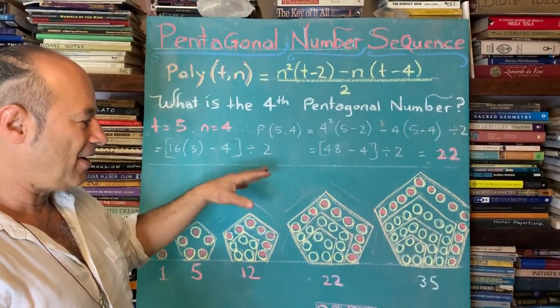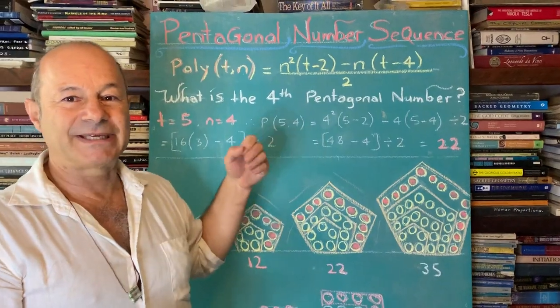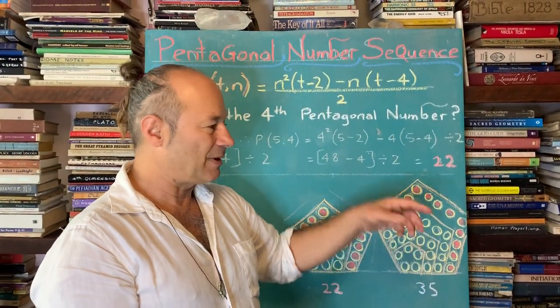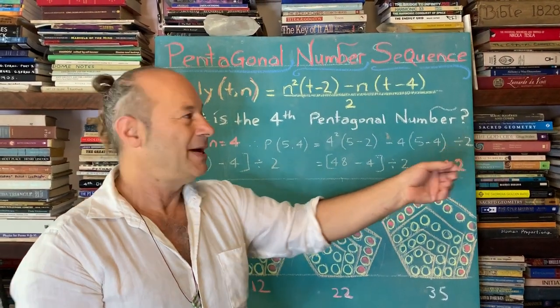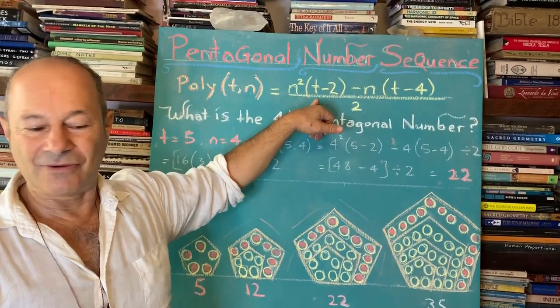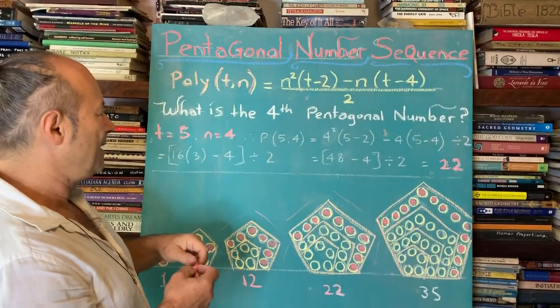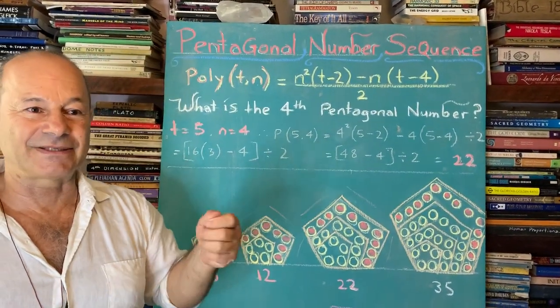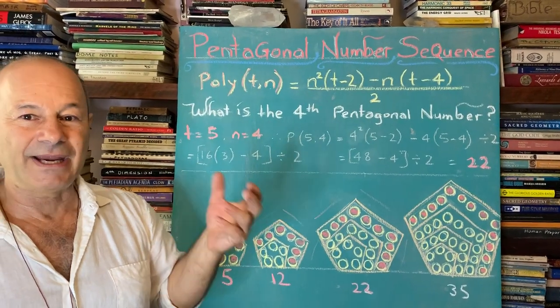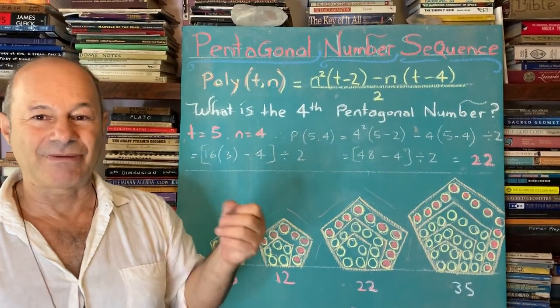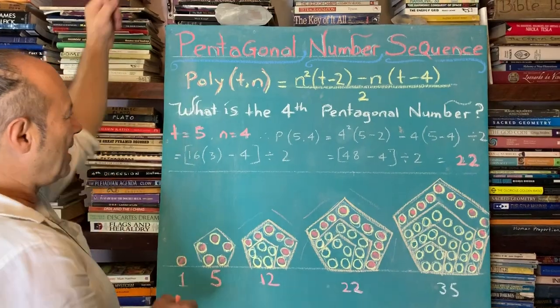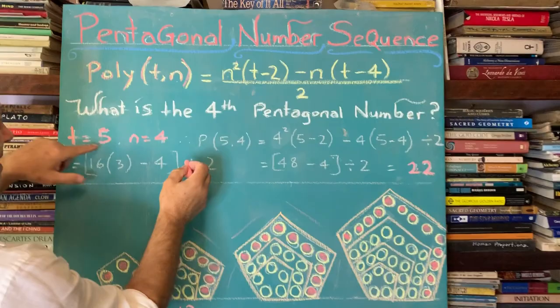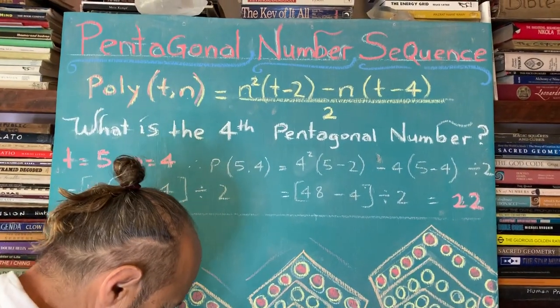But sometimes we can't draw the 20th pentagonal number. It's going to be too big to draw. So just by having this equation, it's solved. It's completely solved. So don't get scared by the mathematics. Just see it as a gift that it's like a code. It's high intelligence. We love mathematical formulae. So I'm going to plug in into this equation.